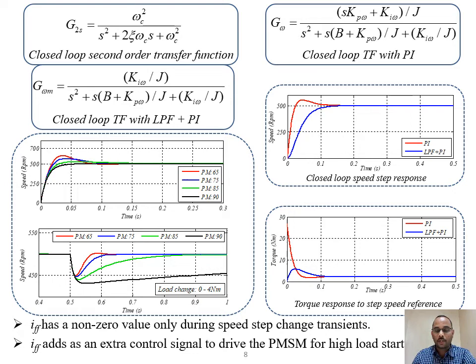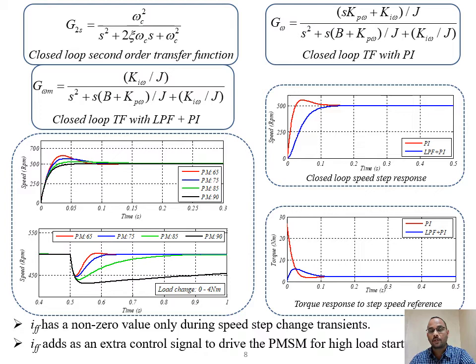The closed-loop transfer function using the PI controller contains a zero introduced by the PI controller. The proposed reference conditioning term cancels this zero with its pole, giving a closed-loop transfer function equivalent to a standard second-order form. The reference conditioning term acts as a low-pass filter whose corner frequency is located to exactly match the zero introduced by the PI controller.